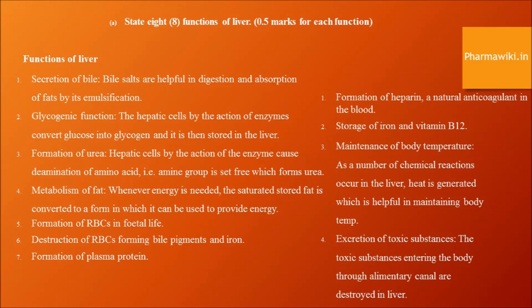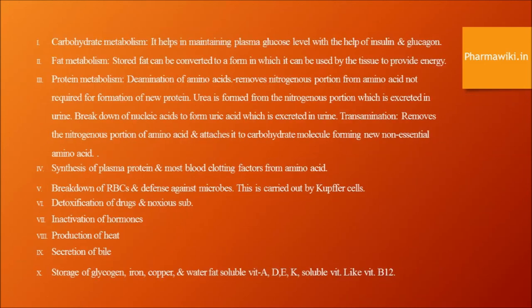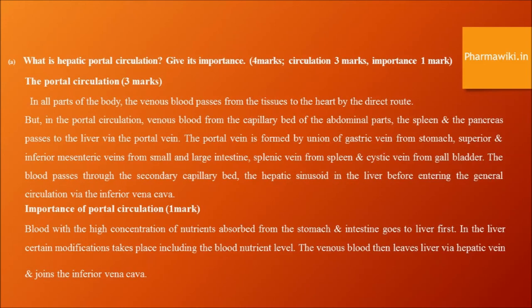What is hepatic portal circulation? In all parts of the body, venous blood passes from the tissues to the heart by a direct route. But in portal circulation, venous blood from the capillary bed of abdominal parts, the spleen, and pancreas passes to the liver via the portal vein. The portal vein is formed by the union of the gastric vein from the stomach, superior and inferior mesenteric veins from the small and large intestine, splenic vein from the spleen, and cystic vein from the gallbladder. The blood then passes through the hepatic sinusoids in the liver before entering the general circulation via the inferior vena cava.